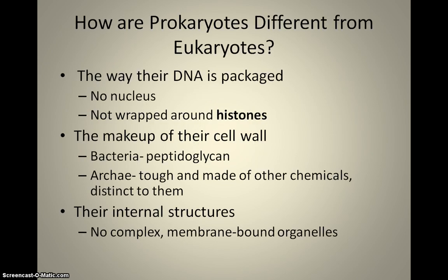So what is the difference between a prokaryote and a eukaryote? One of the major differences is the way that they package their DNA. A prokaryote is an organism that has no nucleus, and its DNA is not wrapped around histones. A histone is a sort of stabilizing protein for the package of DNA in a eukaryote. Prokaryotes have what we call histone-like proteins — they're a little bit different.